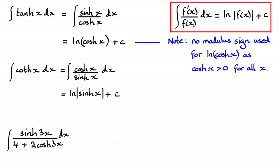Well, if you were to differentiate the denominator here with respect to x, the four is going to go to zero, but 2 cosh 3x becomes 6 sinh 3x.